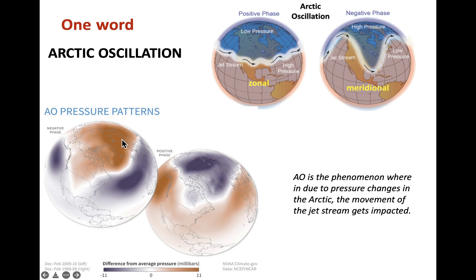During the negative phase, the departure in pressure is positive, which means high pressure. Whereas in the positive phase, the departure is negative, meaning low pressure. Basically, the Arctic Oscillation affects the movement of the jet stream, which is very important during the December to April months, because the jet stream is the one that regulates temperature, especially for the Asian subcontinent during this time.